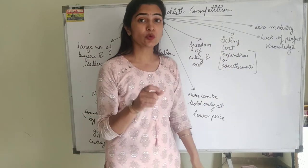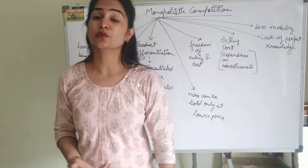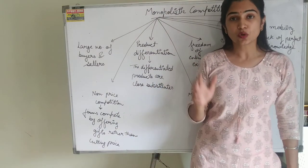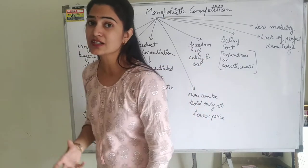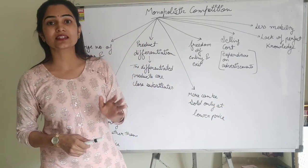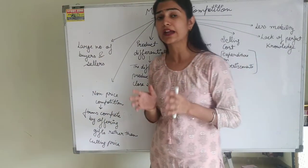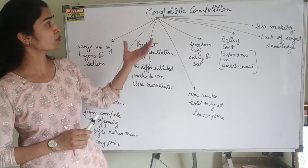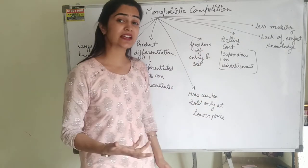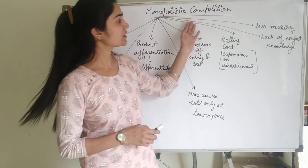There is a high selling cost because the product line is the same. Since the USP feature alone may not be enough to attract customers, sellers have to incur a high selling cost. They incur advertisement costs and invest heavily in advertising. They also have to establish a brand name in order to attract customers in monopolistic competition.